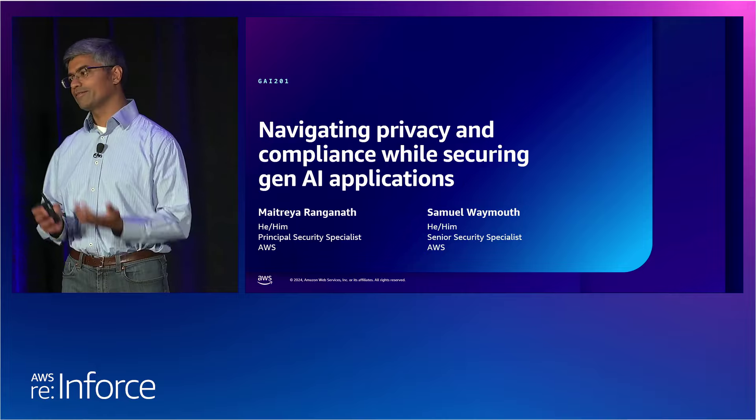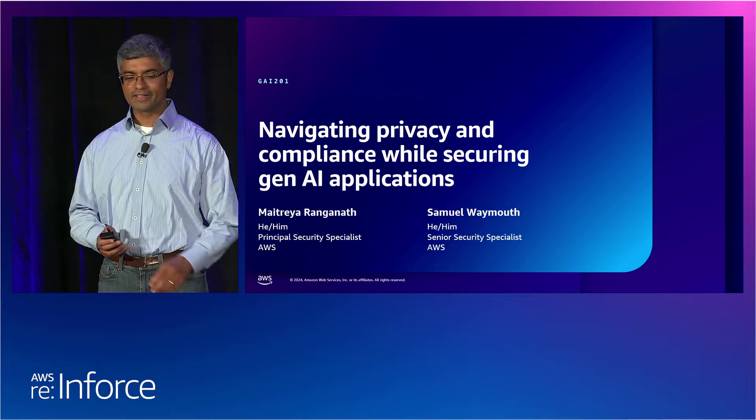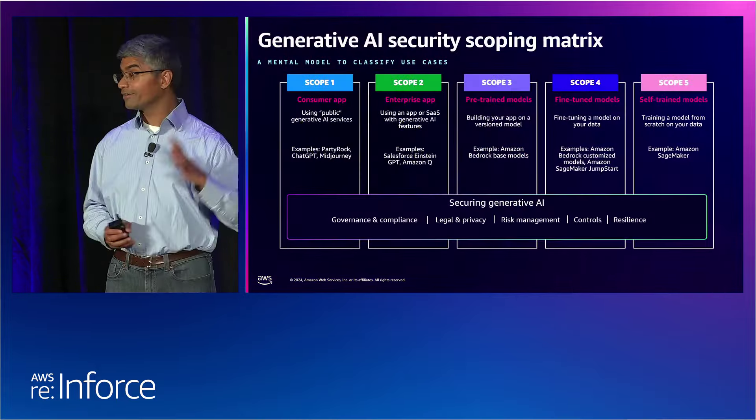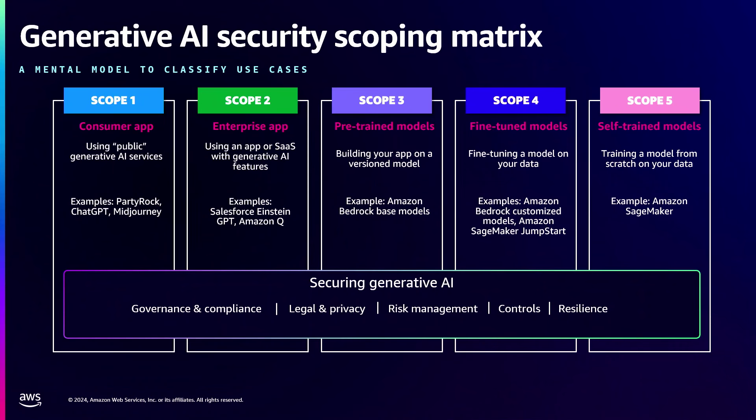In today's session we'll impart some information about how you can think about data privacy as well as compliance. First, I wanted to start by describing the generative AI scoping matrix. By a show of hands, how many people saw this in the keynote or have seen a session that dives deep into that? This is going to be the thread throughout our talk — a mental model that helps you think about different use cases of generative AI.